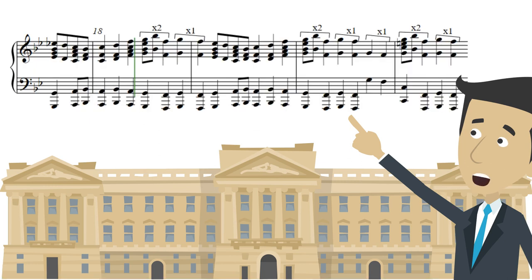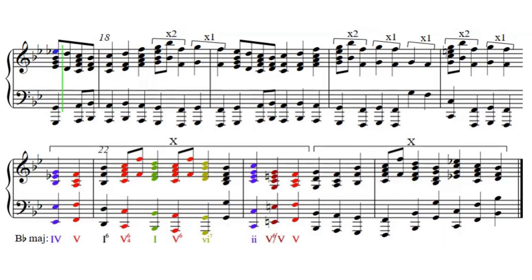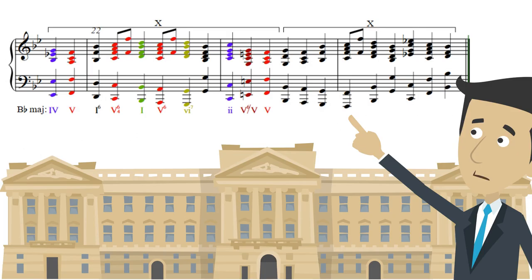Measures 18 to 21 presents many cell X1s and X2s. Measure 22 to 24 returns to the main key and main motif, repeated and ends with a perfect cadence.